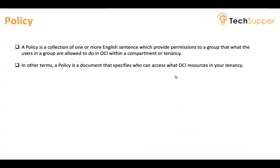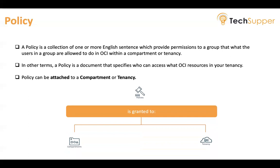In other terms, a policy is a document that specifies who can access which OCI resources in your tenancy. A policy simply allows a group to work in certain ways with specific types of resources in a particular compartment. A policy you create can be attached to a compartment or to a tenancy — tenancy means the global level, compartment is like your local level.